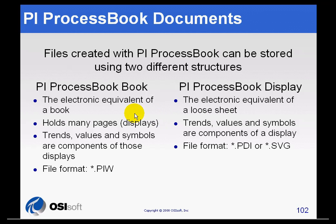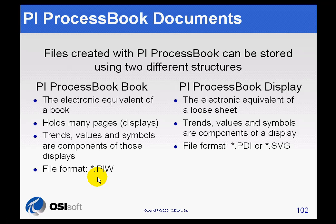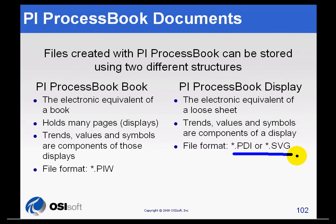Process Book can create two different types of documents: a book or a display. The book is like a ring binder, and the displays are like sheets within that book — a motif you will find in our PIW files. If you have a lot of process books, we do have mechanisms to export those in an SVG format. However, the SVG format only supports the display level, so you will not be able to export the full PI Process Book with chapter headings in SVG format.